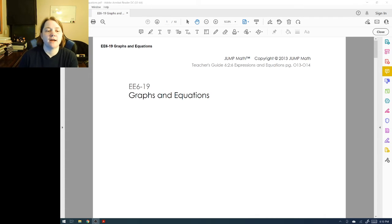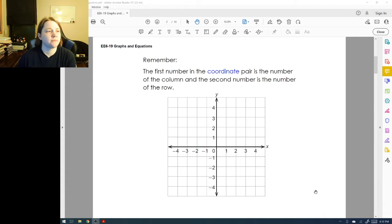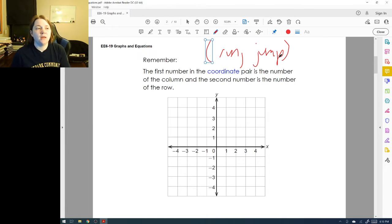This video is going to talk about graphs and equations. Remember that the first number in the coordinate pair is the column, I like to call that the run. And the second number is the row, I like to call that the jump. Remember that I think about a two-dimensional video game character running along the line and then jumping up or falling down.